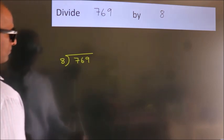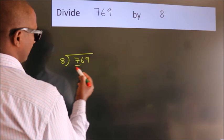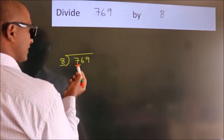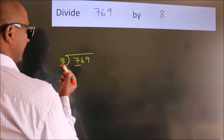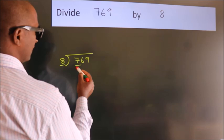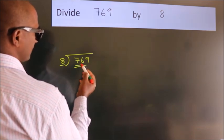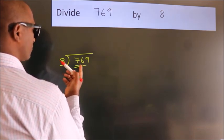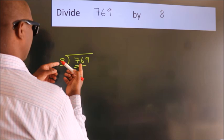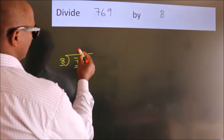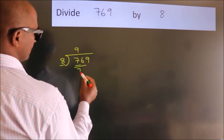Next, here we have 7, here 8. 7 is smaller than 8, so we should take two numbers: 76. A number close to 76 in the 8 table is 8 nines, 72.